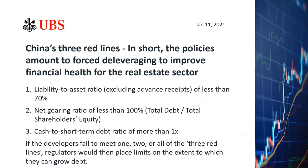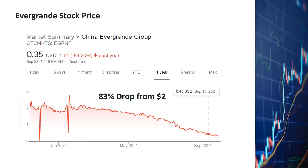Recently, the Chinese government announced three red lines to curb over-leveraging in the real estate market. The requirements for real estate companies are: first, the liability-to-asset ratio should be less than 70%; second, the net gearing ratio (total debt divided by total shareholder equity) should be less than 100%; and third, the cash-to-short-term debt ratio should be more than one. If a developer fails to meet one, two, or all three of the red lines, the regulator will flag them. Evergrande, one of the biggest real estate developers in China, violated all three red lines and subsequently got into financial trouble. Since January, Evergrande's stock price has dropped by more than 83%.